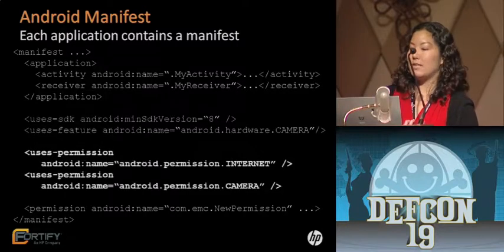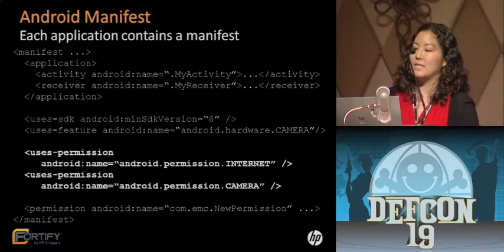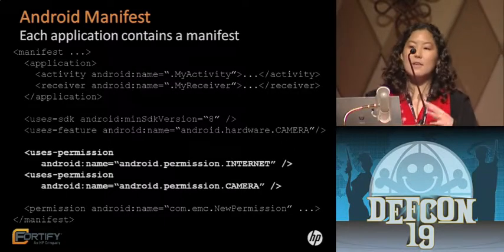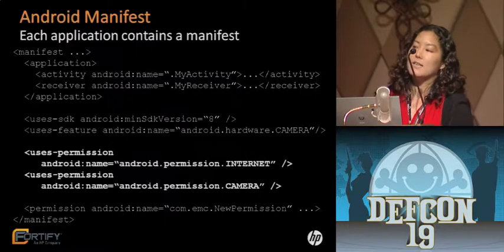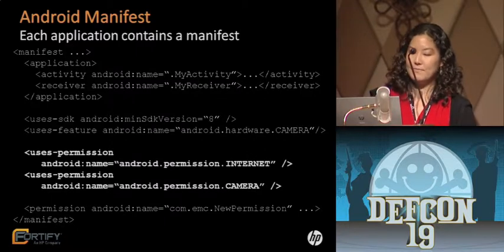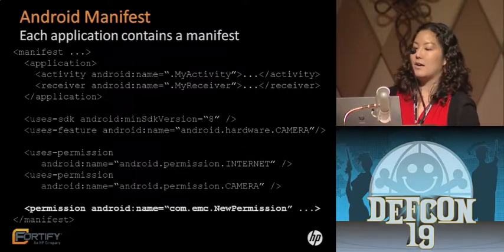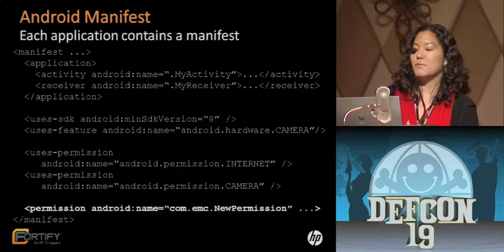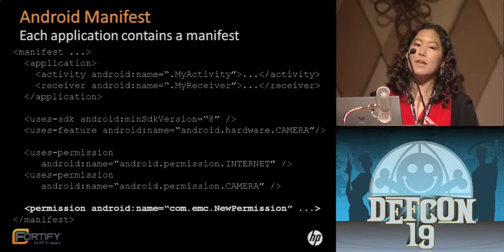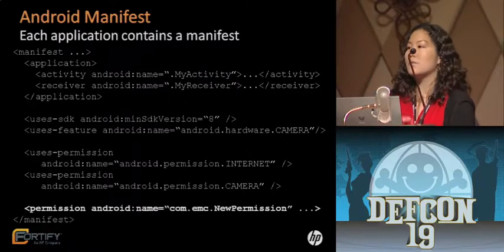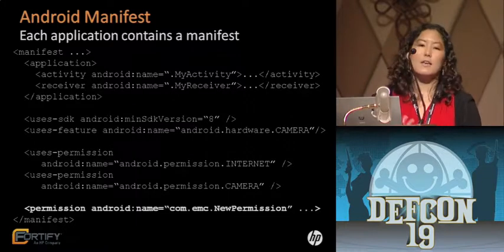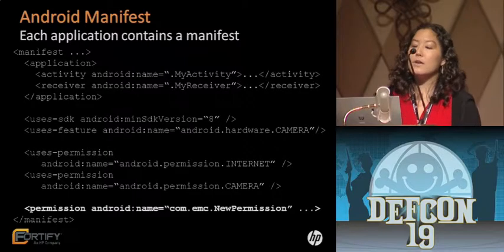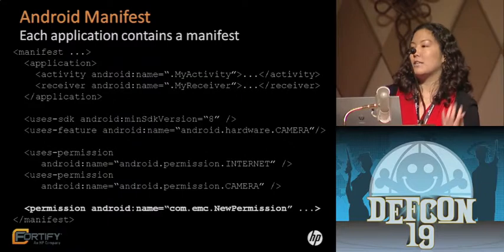Most importantly, the manifest is where permissions are requested — these are denied or granted at install time. Here the application is requesting the internet and camera permission. Developers can also create their own permissions, which are applied to the global system. The developer can set how a permission is to be obtained: it can be a normal permission granted automatically on install, require user approval, or require that a requesting application has the same signature as the application that defined the permission.